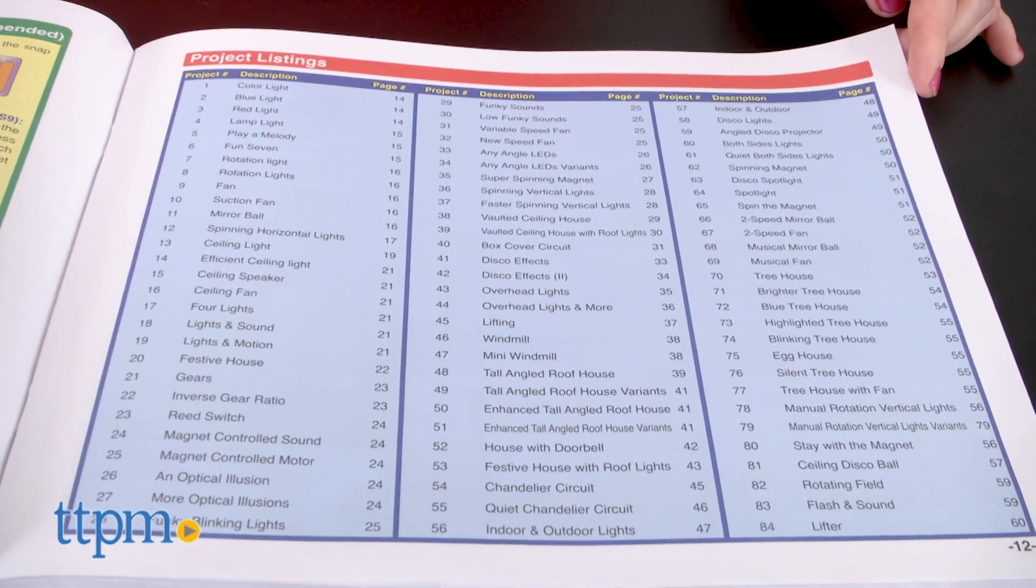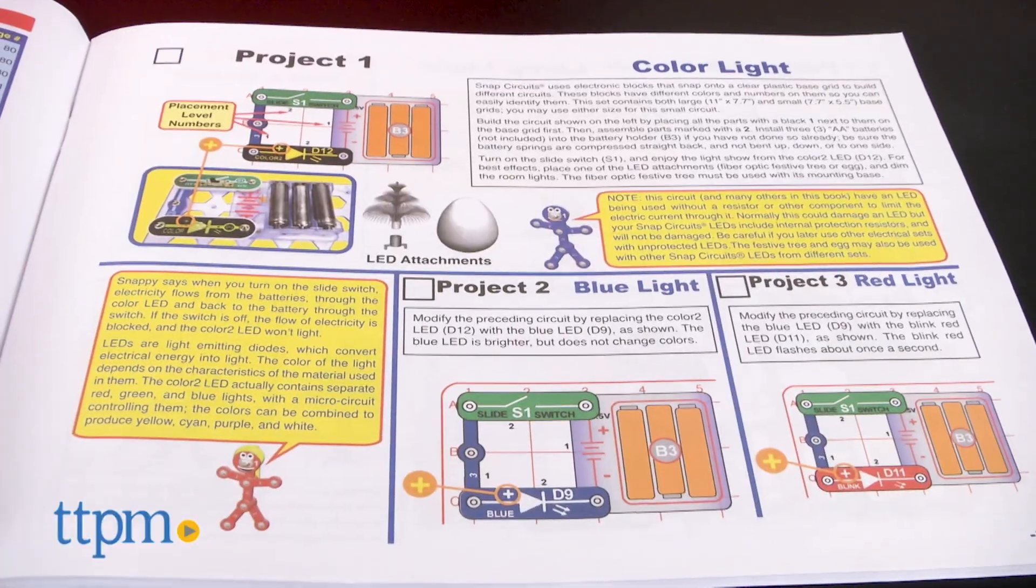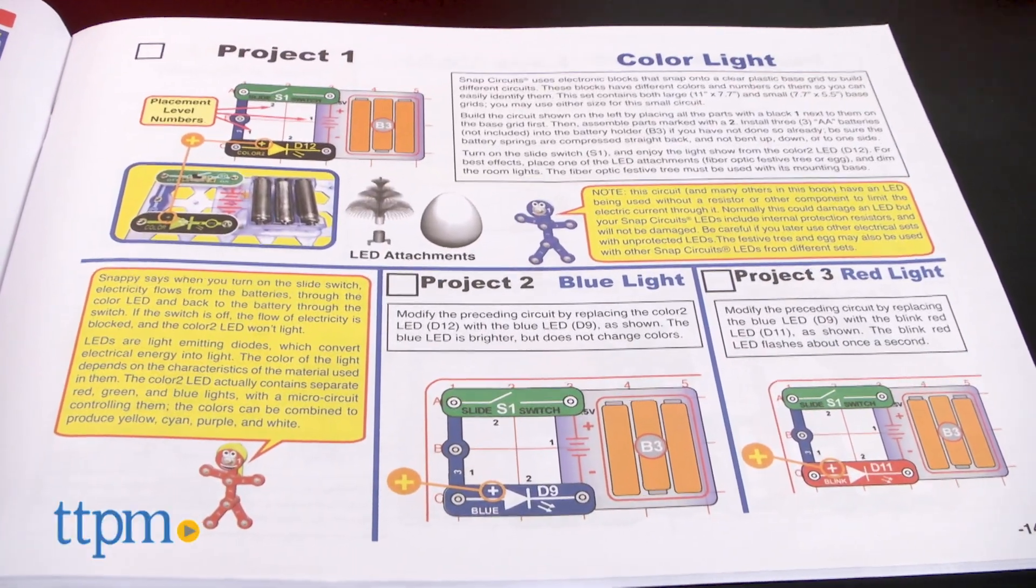You will need three AA batteries. Kids will build things that light up, things that light up and move, and things that play music or sound.